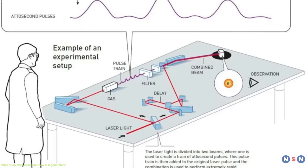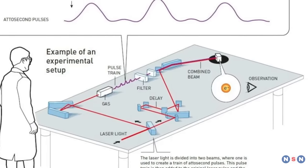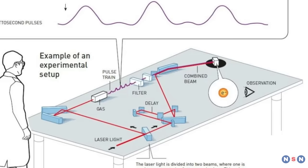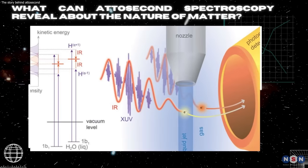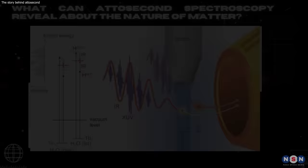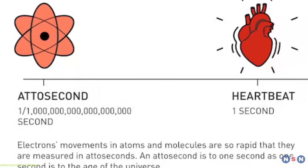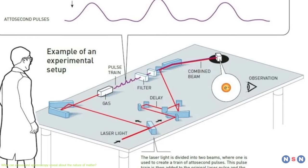These photons can be combined to form an attosecond pulse of light that can be used to probe other atoms or molecules. Now that we know what an attosecond is and how it is generated, let's see what we can do with it.